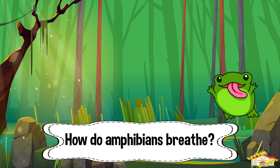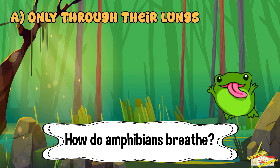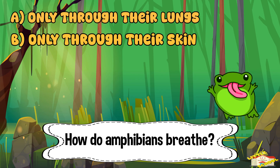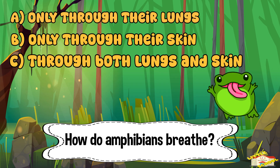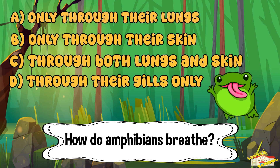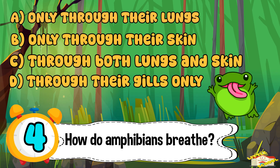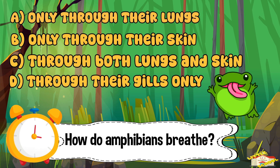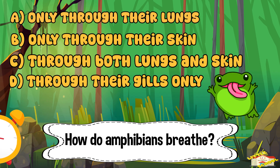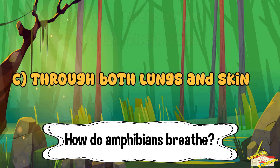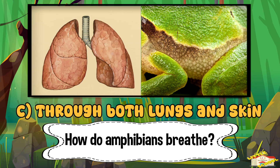Question 4: How do amphibians breathe? A) Only through their lungs, B) Only through their skin, C) Through both lungs and skin, or D) Through their gills only? Five, four, three, two, one. And the answer is letter C — through both lungs and skin.